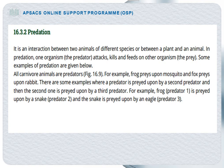Always remember that all carnivore animals are predators. For example, a frog preys upon a mosquito — the frog is the predator while the mosquito is the prey. A fox preys upon a rabbit — the fox is predator while the rabbit is prey. A predator may also be preyed upon by another predator. For example, if the frog is preyed upon by a snake, the frog becomes prey and the snake becomes the predator. If the snake is then preyed upon by an eagle, the eagle becomes the third predator and the snake becomes prey.